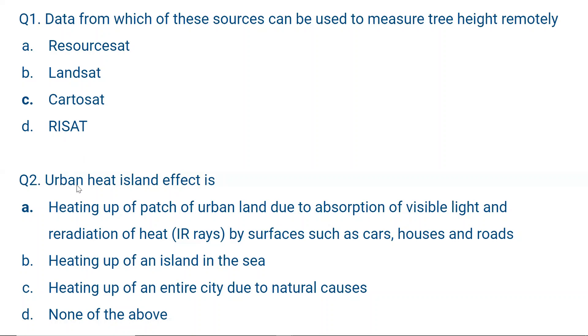Question number 2. Urban heat island effect is the heating up of a patch of urban land due to absorption of visible light and re-radiation of heat, that is infrared rays, by surfaces such as cars, houses, and roads.